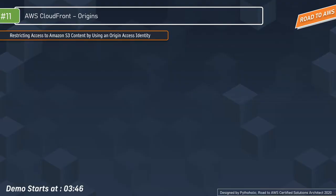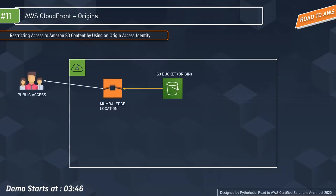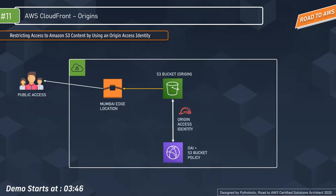Before starting the demo I wanted to discuss this again for a recap. How do we restrict access to our Amazon S3 content using an origin access identity? Let's suppose we have our AWS cloud infrastructure with an S3 bucket and many users trying to access the files, but not all users are eligible. We protect our data using an origin access identity with an S3 bucket policy.